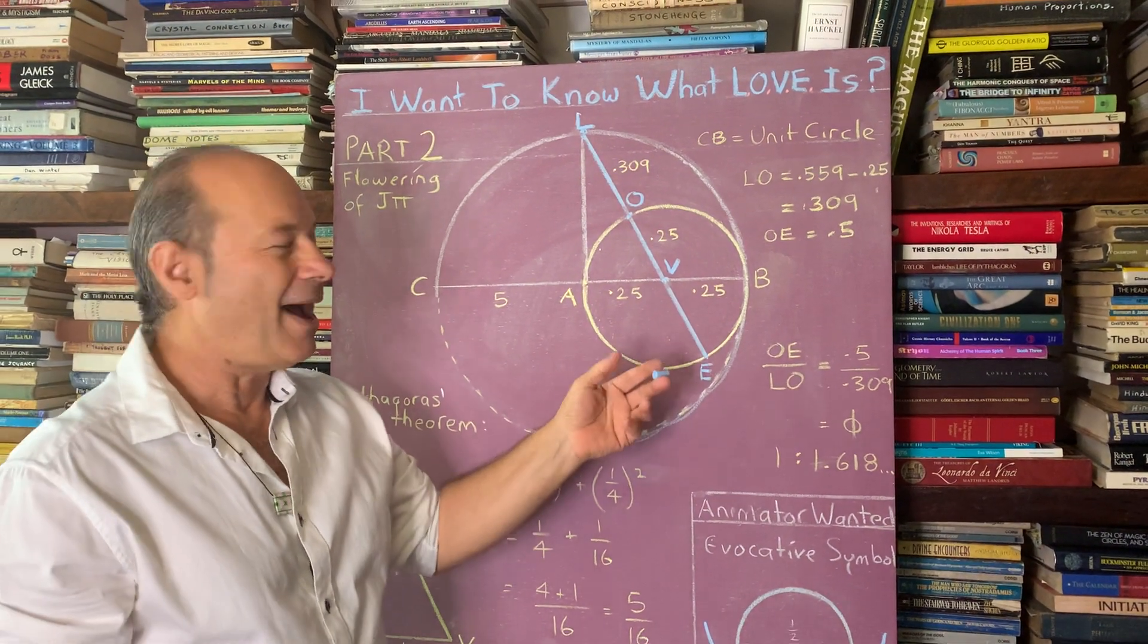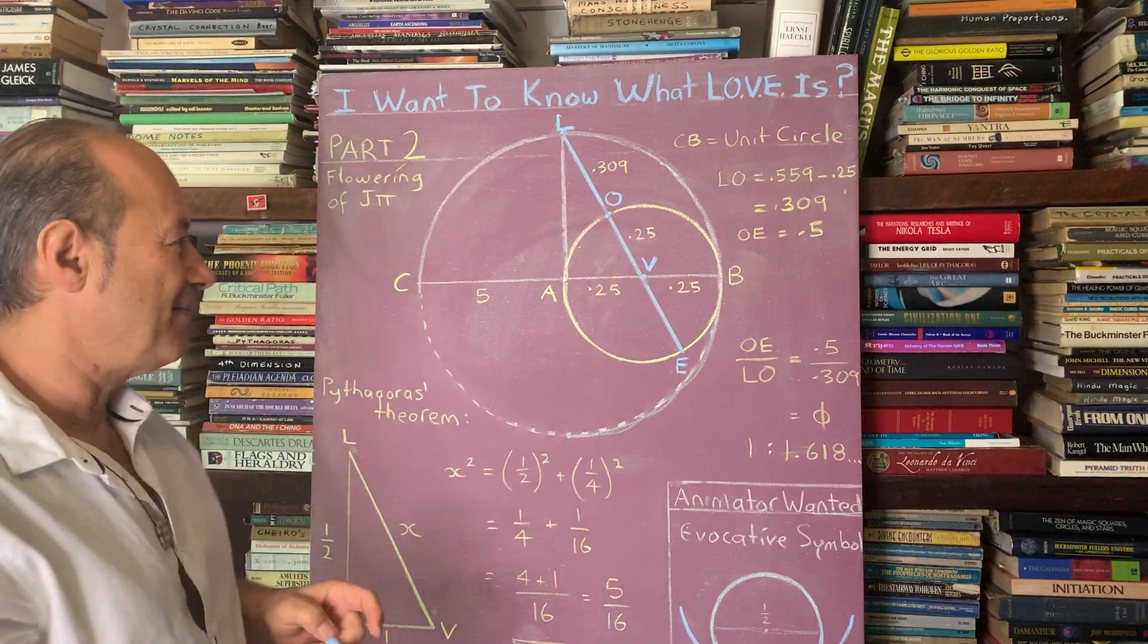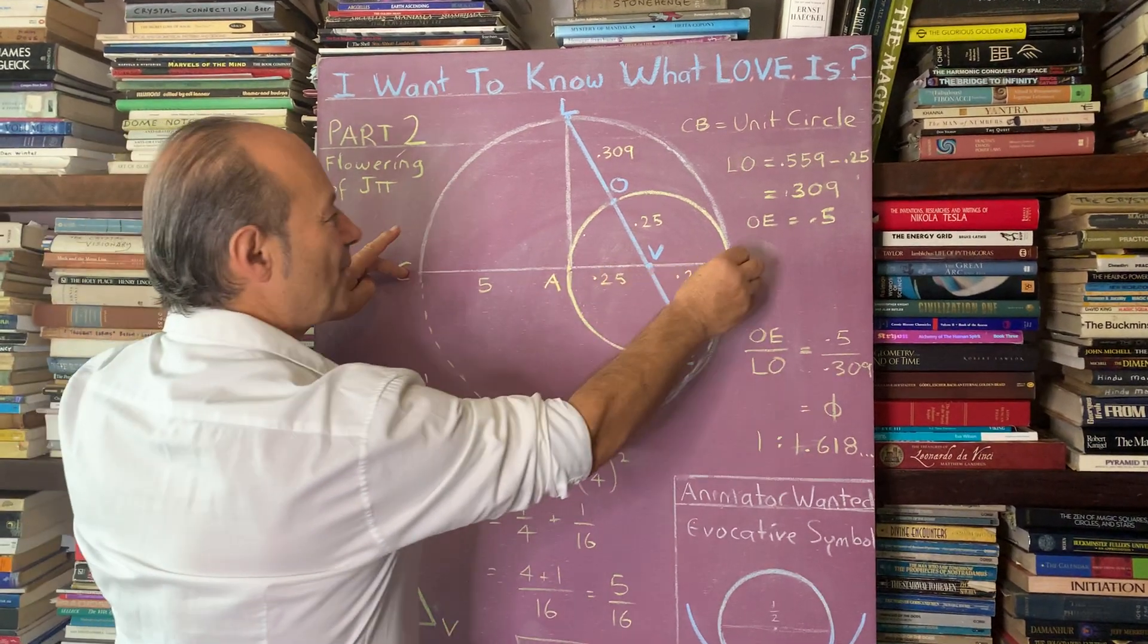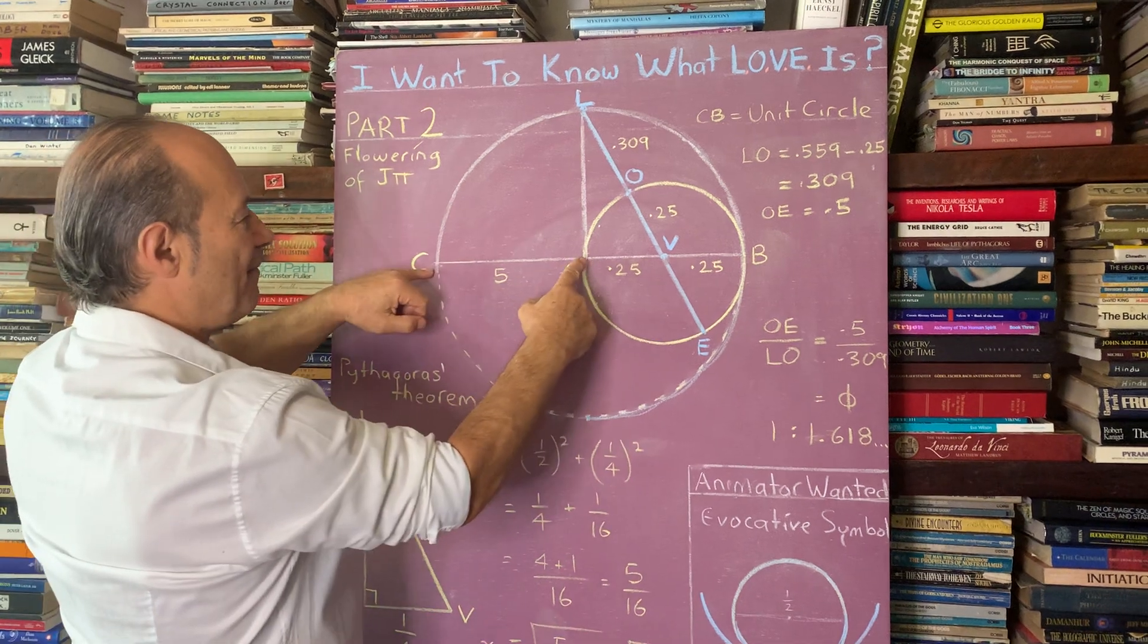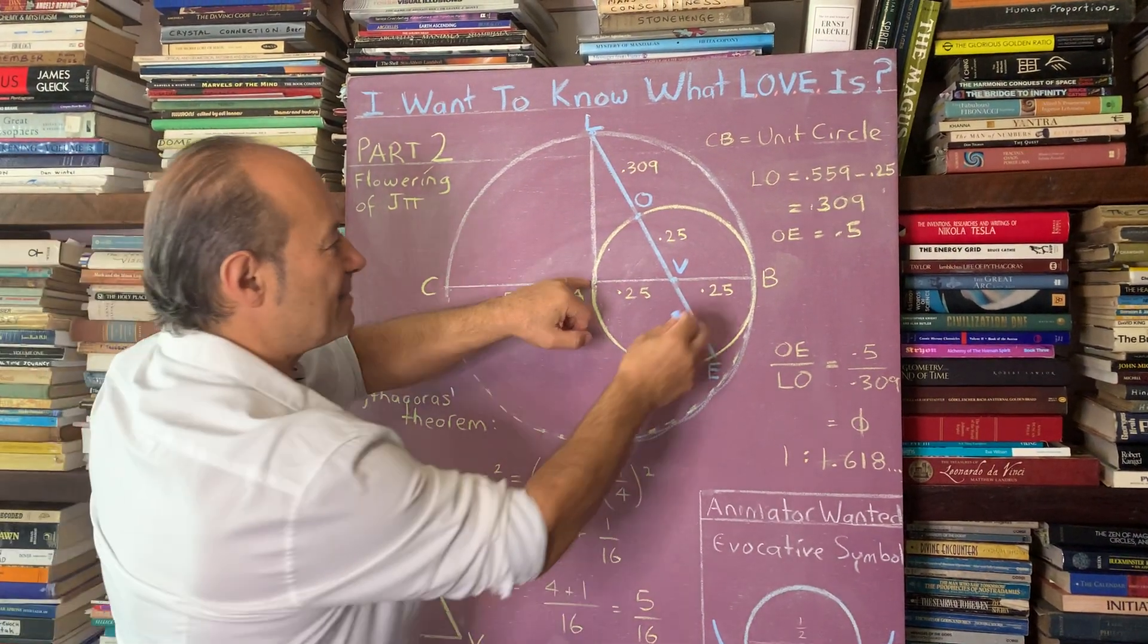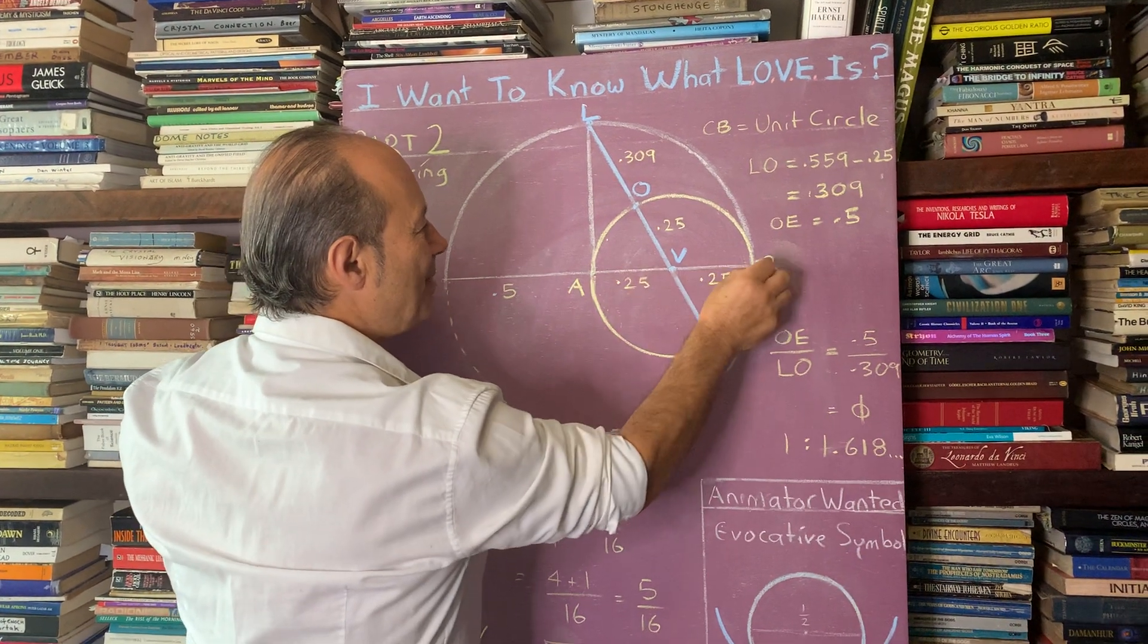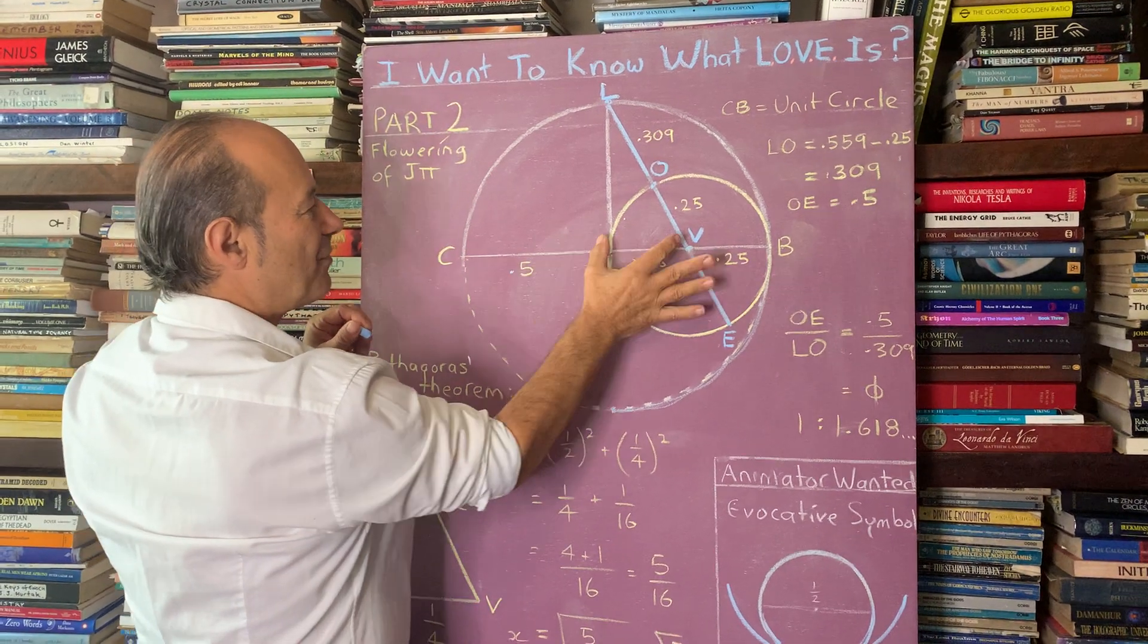And I want to show you how we can calculate this length of L-O-V-E. So first of all, we start off with a big circle. This is called the unit circle because the radius from here to there is 0.5. And that means when I draw another circle here, the diameter is 0.5, the radius is a quarter. So half, quarter and a quarter.